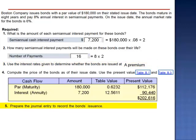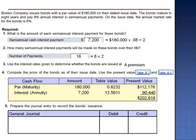Number 5, we're asked to prepare the journal entry to record the bonds issuance. Debit cash for the amount that we receive, $202,616. Credit premium on bonds payable for $22,616. And credit bonds payable for the par value, $180,000.